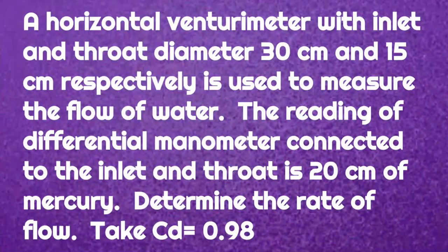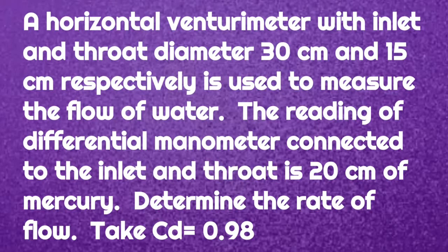The given problem: a horizontal venturimeter with inlet and throat diameters 30 centimeter and 15 centimeter respectively is used to measure the flow of water. The reading of the differential manometer connected to inlet and throat is 20 centimeter of mercury. Determine the rate of flow; take Cd, the coefficient of venturimeter, equal to 0.98.